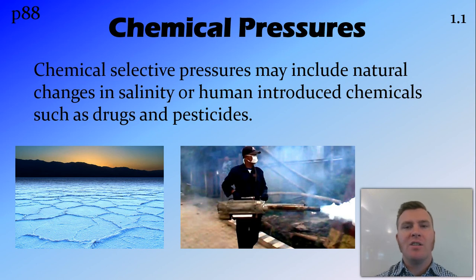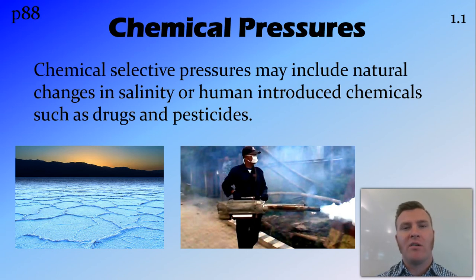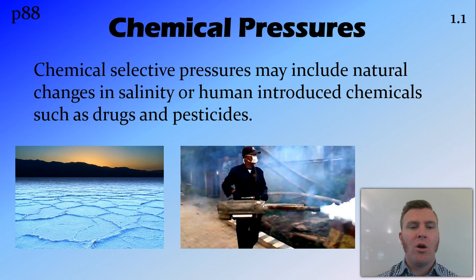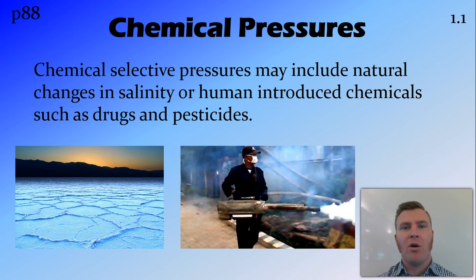Chemical selective pressures may include natural ones, such as a change in salinity, or man-made chemicals that place pressure on an environment. That could be on purpose or by accident. For example, antibiotics is a drug we've used on purpose, and pesticides such as DDT are another chemical introduced to the environment on purpose, which has caused chemical pressure on populations.